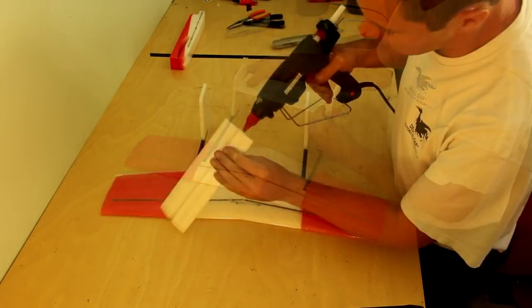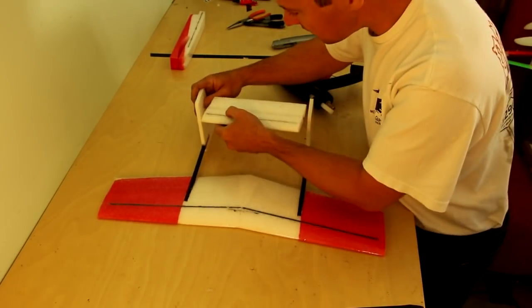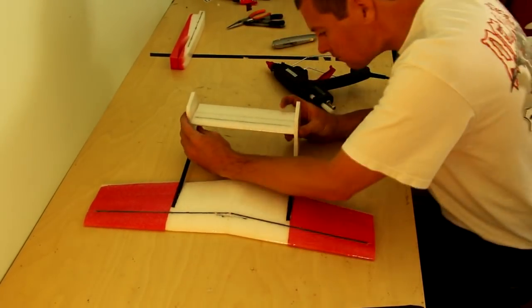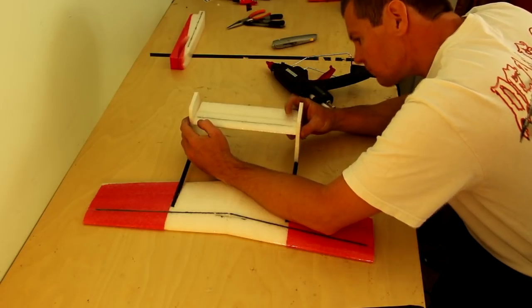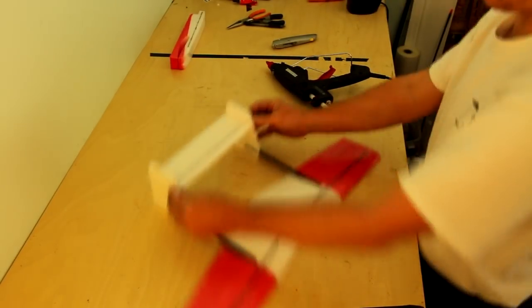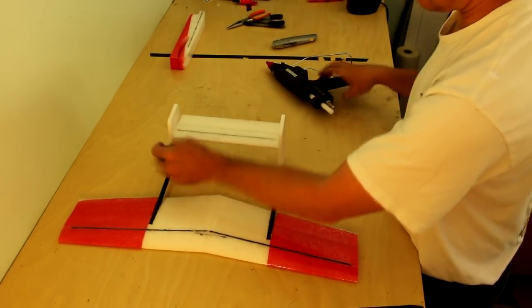If you look carefully on the vertical stabilizers you'll see two alignment marks that help align the tail. Then simply hot glue them in. You can see that the alignment marks are about an inch and a half to two inches below the top.